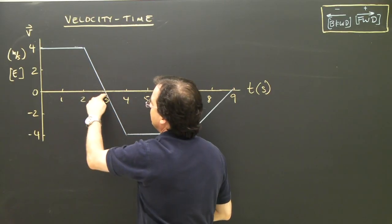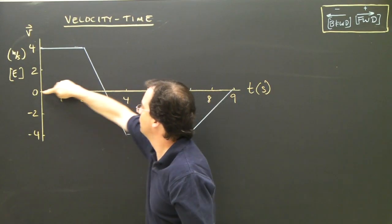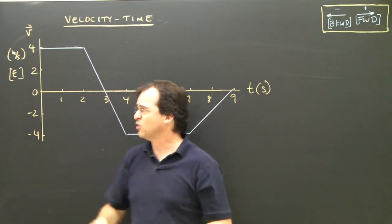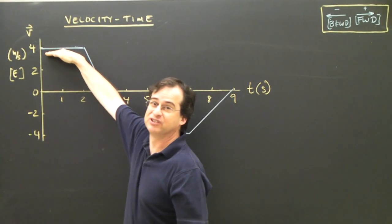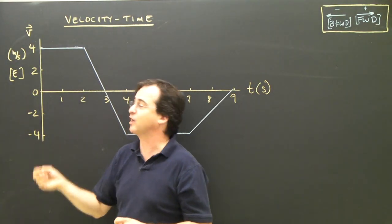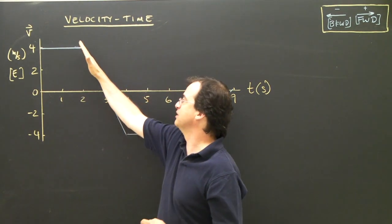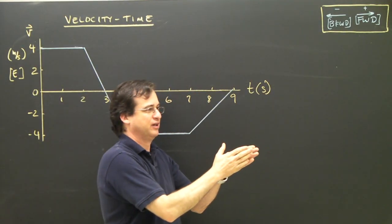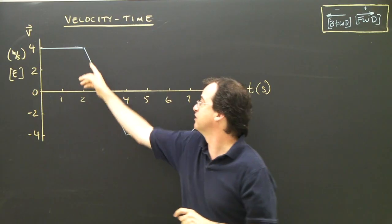Between two and three seconds, I go from four meters per second at two seconds to zero meters per second at three seconds, so I must be slowing down. We always look at the slope — the slope is the acceleration. In the first section the slope is zero, so I'm not accelerating either way. In this section the slope is negative, so I'm accelerating negatively. I'm moving forward and accelerating negatively, which means I'm slowing down.